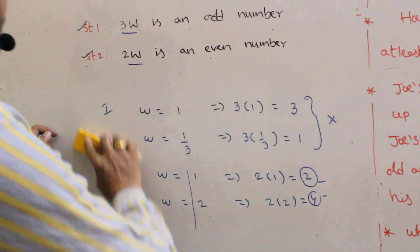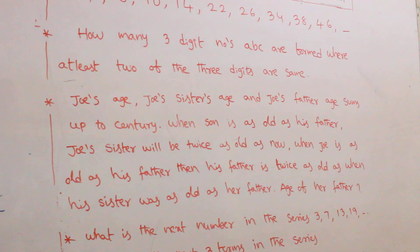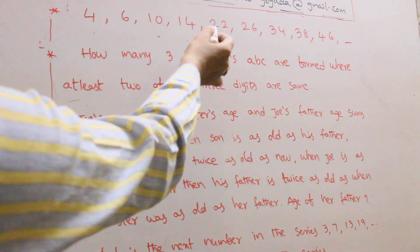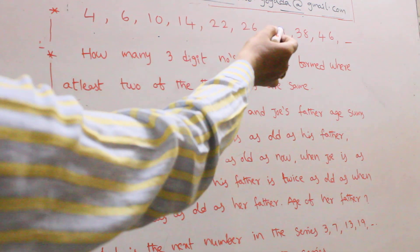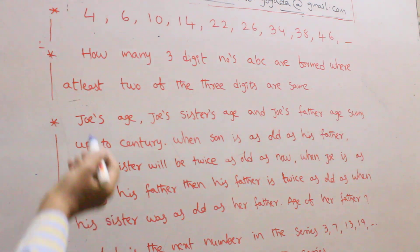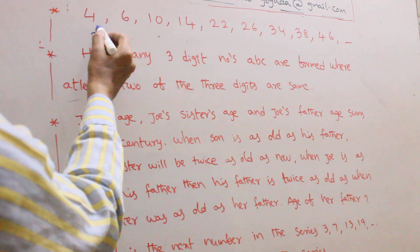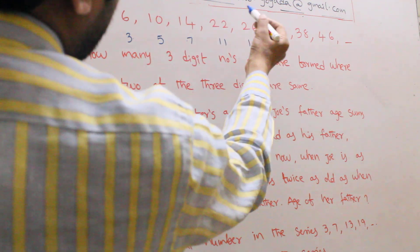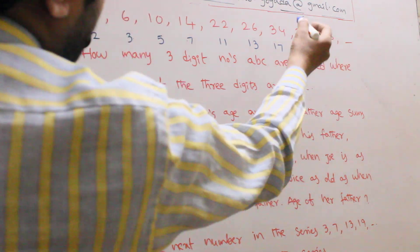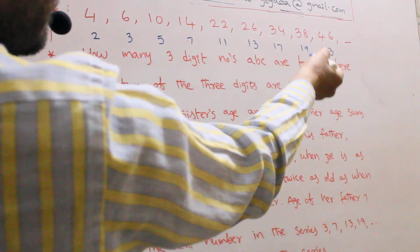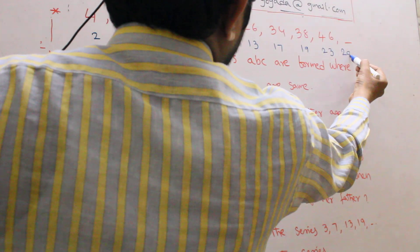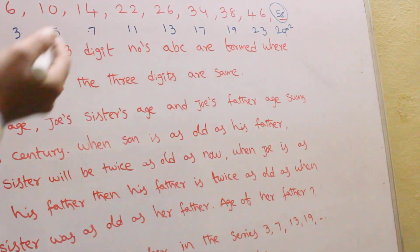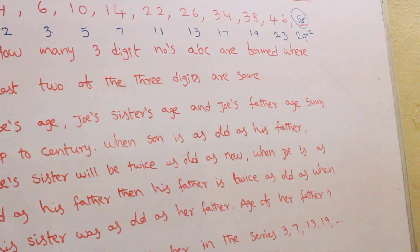Coming to the next question. The series is: 4, 6, 10, 14, 22, 26, 34, 38. Just observe this — 2 double is 4, 3 double is 6, 5 double is 10, 7 double is 14, 11 double is 22, 13 double is 26, 17 double is 34, 19 double is 38. What are these numbers? Prime numbers! The next prime number is 29, and 29 doubled is 58. The logic is the double of the prime number. Your answer is 58.